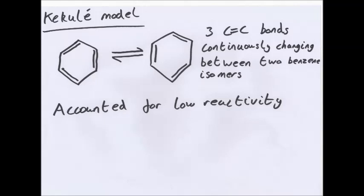To overcome this, he said that there were two isomers of benzene. So the double bonds were constantly changing places. Instead of having 1,3,5 for double bonds, you'd have 2,4,6. And they were constantly changing between the two isomers.